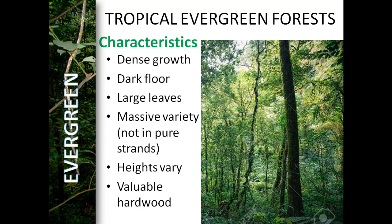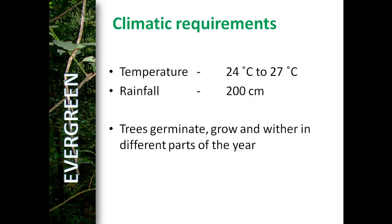In evergreen forests there is a massive variety of species — we will not see a pure strand, meaning a single species; there are multiple species of trees and plants. The height of trees varies and there are also a lot of valuable hardwoods available. The climatic requirement of such forests is a temperature range between 23°C to 27°C and rainfall of 200 cm. Throughout the year these forests remain evergreen because many species wither and grow in different parts of the year, and they appear evergreen throughout.